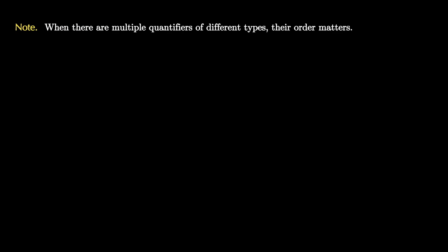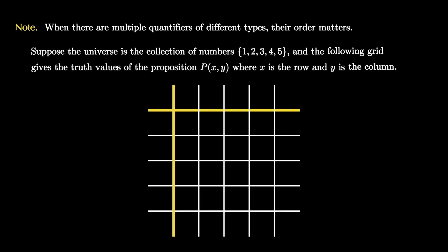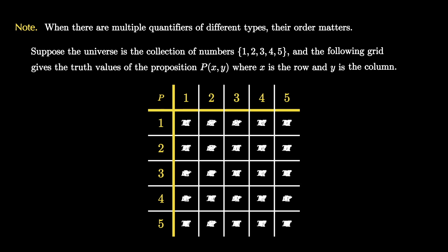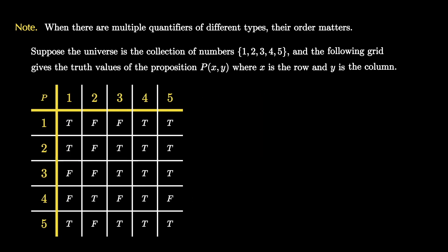Quantifiers get a little bit trickier when we think about combining two or more quantifiers together, and the order of quantifiers sometimes matters. When there are multiple quantifiers of different types, their order matters. Suppose that the universe is a collection of objects 1, 2, 3, 4, and 5, and the following grid gives the truth values for our proposition P(x, y) where x is the row and y is the column. Suppose that we populate this table with the following truth values, so that we now have a full grid of information about the predicate P(x, y) at the various values of x and y.